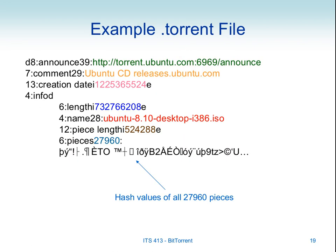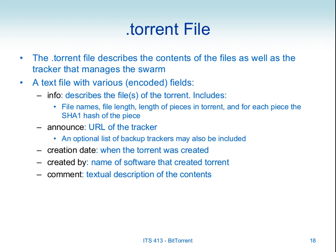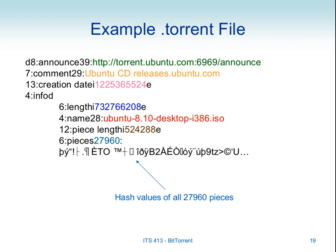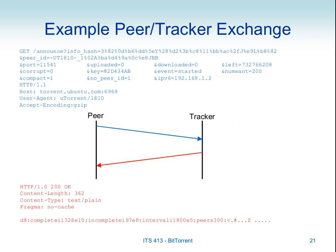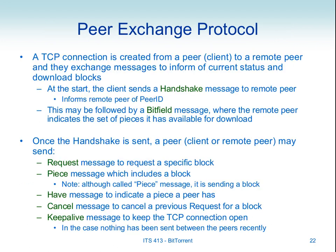We went through an example of the structure of the .torrent file—remember that's a descriptor. It describes the torrent; it doesn't contain the actual content, but includes the tracker address and information about the pieces, since the torrent is broken into multiple pieces. Peer-to-tracker communication is done using HTTP. The tracker sends back a list of peers we can contact, and then the peer exchange protocol is used for downloading pieces.